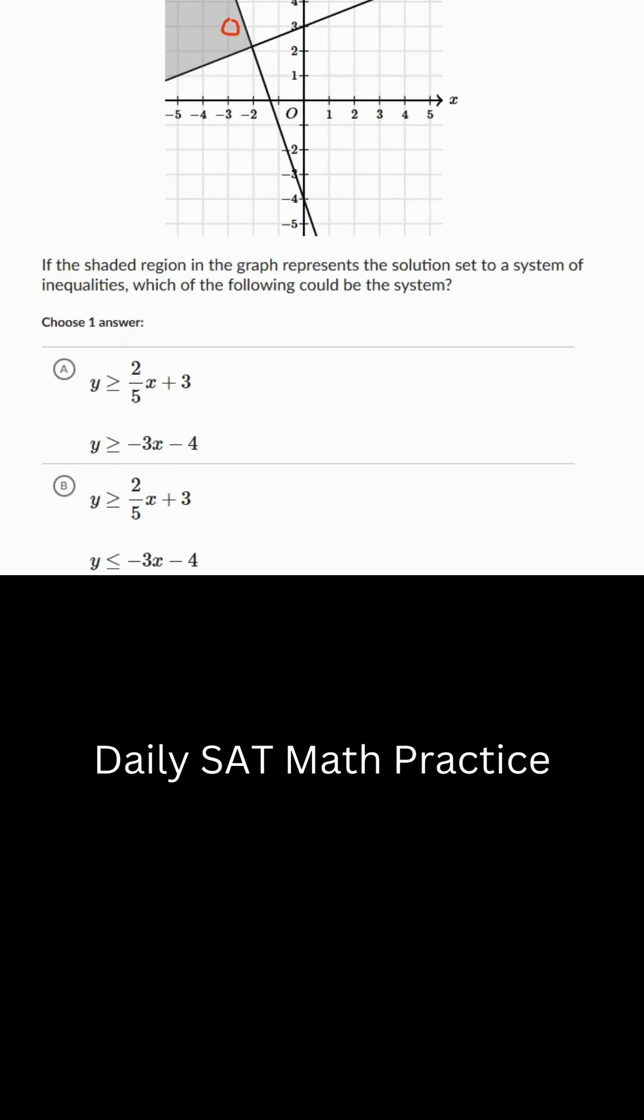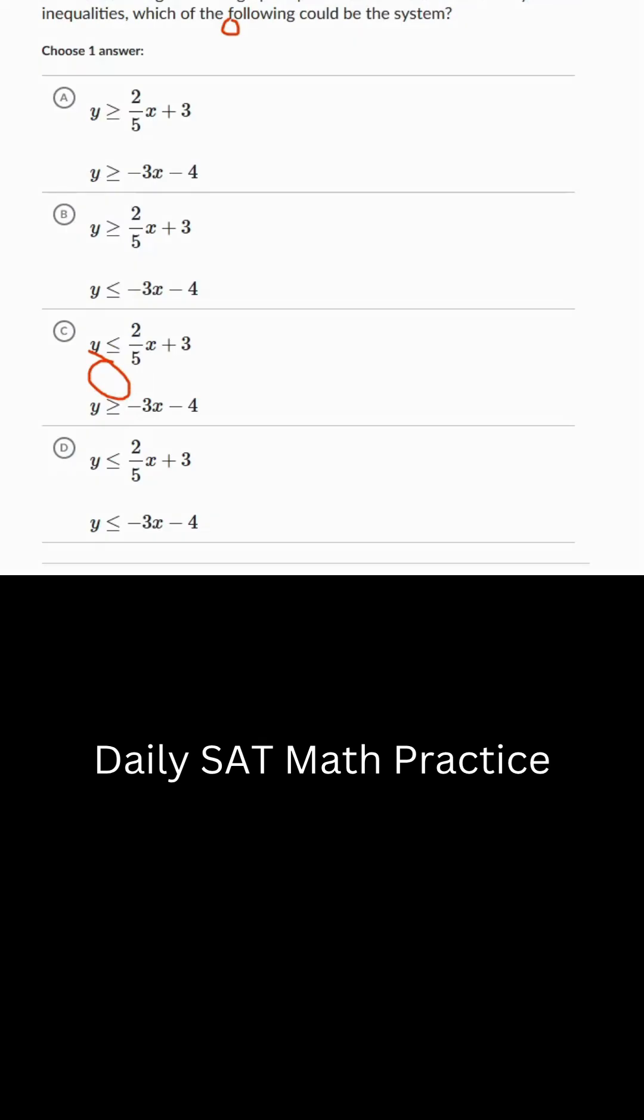So 3 is greater than or equal to 2 over fifths times negative 3 plus 3. Now we know that this is going to be less than 3 because this is going to be a negative number. So it's going to be subtracting from 3. So we know that this equation is going to be greater than, which means we can eliminate answer choices C and D.